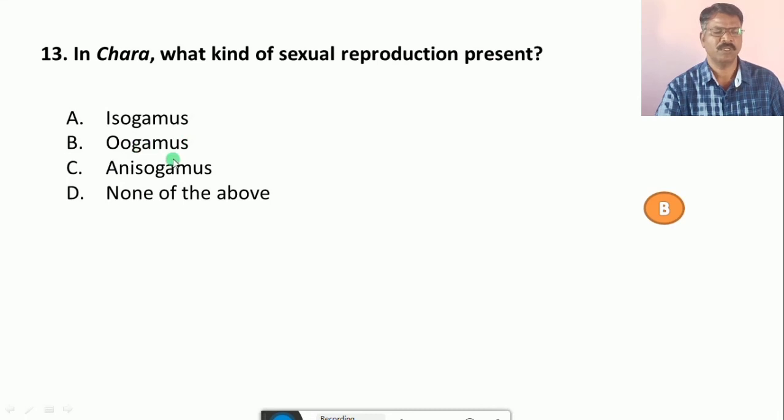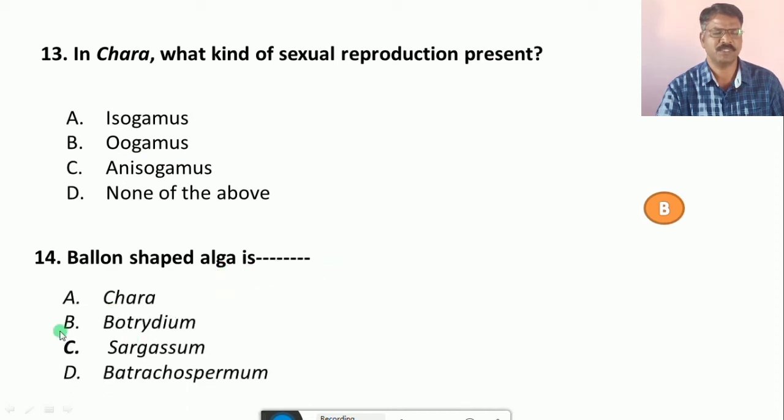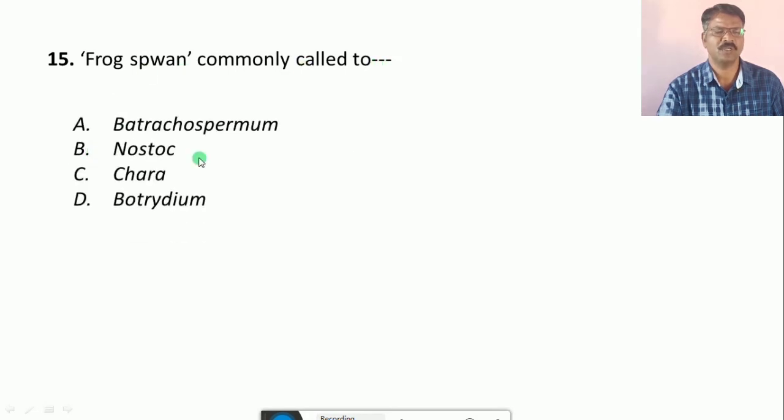Question number 14: Balloon-shaped alga is... A. Chara, B. Botrydium, C. Sargassum, D. None of the above. The correct answer is B, that is Botrydium. Question number 15: Frog spawn commonly called to... Their options are A. Batrachospermum, B. Nostoc, C. Chara, D. Botrydium. The correct answer is A, that is Batrachospermum is called as Frog spawn.